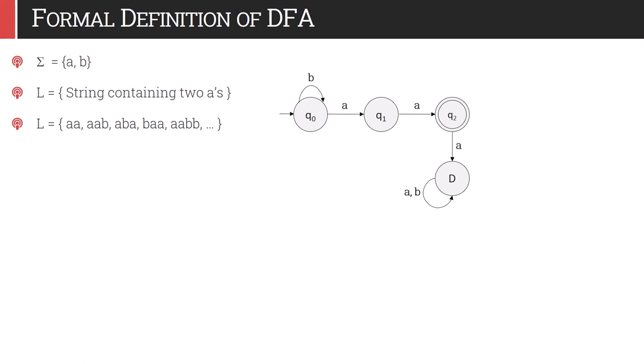From q0 both arcs for 'a' and 'b' are now present. From q1, the arc for 'a' is already there; we can add a self-loop for 'b' as well, since both a's do not need to be consecutive. From q2, after reading two a's, we can still read any number of b's, so a self-loop on q2 for 'b' is valid. This is the complete finite automata. For every state there are two transitions, and there is also a dead state, though in future DFAs we will omit the dead state to reduce diagram complexity.